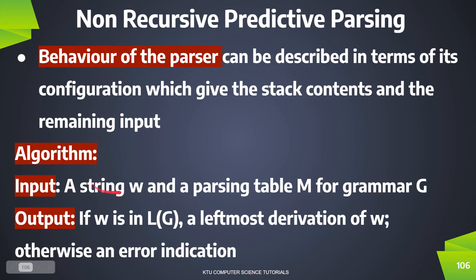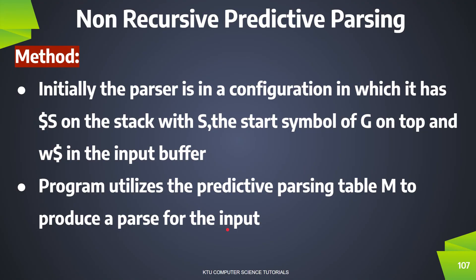The inputs are: the parsing table M and the input string. The output is: if w is in L(G), you will have a leftmost derivation for grammar G; otherwise, an error. In the first step, we add $ at the bottom of the stack and push the start symbol onto the stack. We also place the input string in the buffer followed by $.